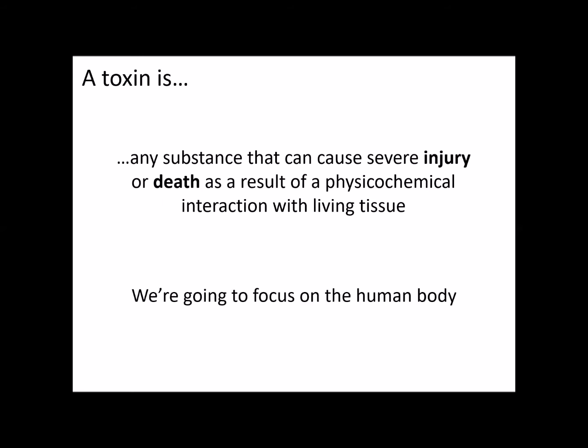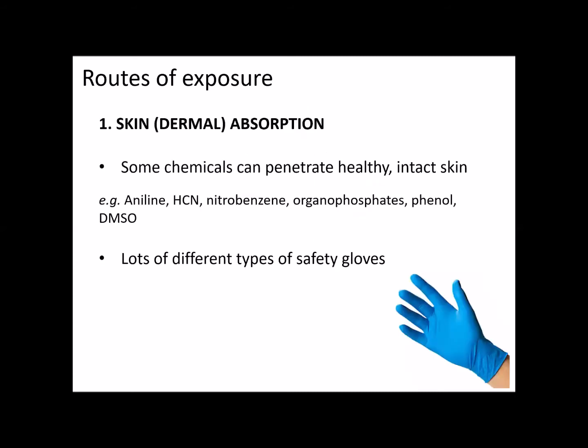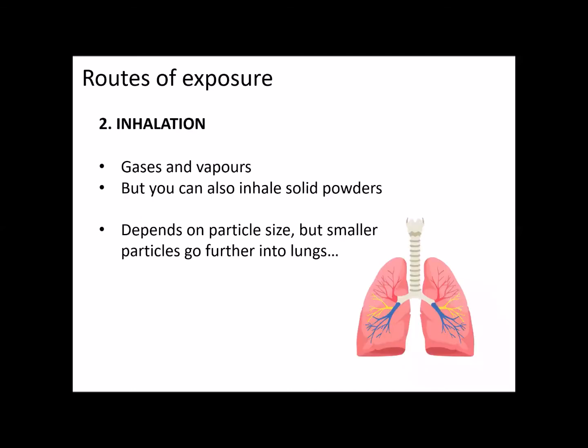We're going to focus mainly today on the human body. Let's look at routes of exposure as a way to start — how do chemicals actually get into the body to cause harm? We're going to look at three main ways. The first is skin absorption, so dermal absorption. There are many chemicals that can actually go through healthy intact skin, such as aniline, organophosphates, and DMSO — dimethyl sulfoxide — a solvent used in chemical laboratories. This is the reason we wear gloves when working with hazardous chemicals, and there are many different types of safety gloves depending on the chemical.